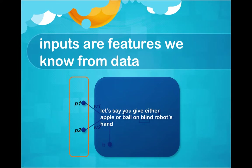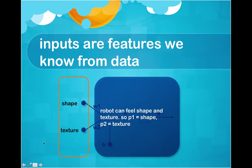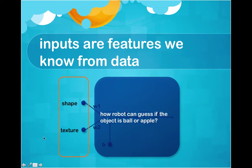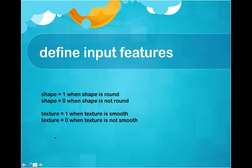Here's a very interesting example. Let's say you place either an apple or a ball in a blind robot's hand. How can the robot distinguish the apple from the ball? Let's say P1 is shape and P2 is texture. We define the input features: shape is 1 when the shape is round and 0 when the shape is not round. Texture is 1 when the texture is smooth and 0 when the texture is not smooth.